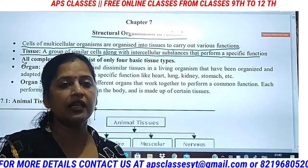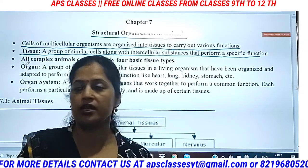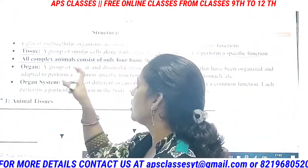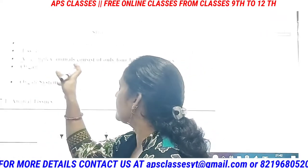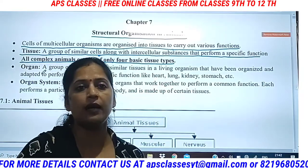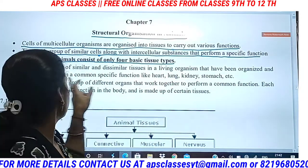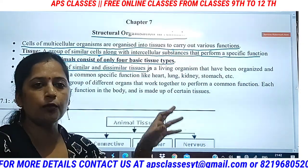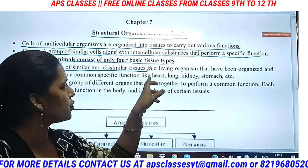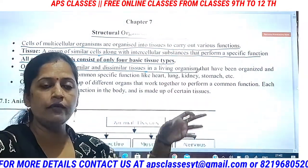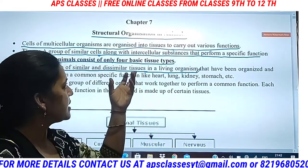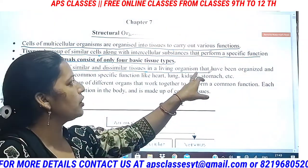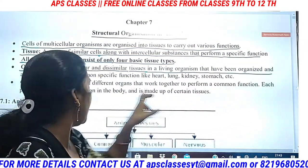All complex animals consist of only four basic tissue types. Next is the organ — what do we mean by organ? An organ is a group of similar and dissimilar tissues in a living organism that have been organized and adapted to perform a common specific function.